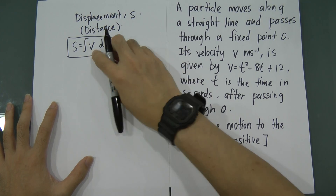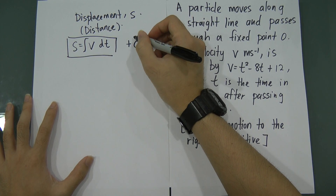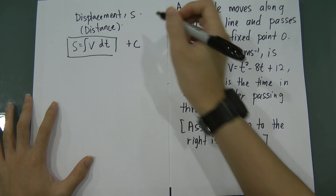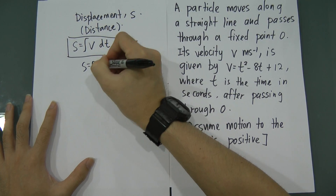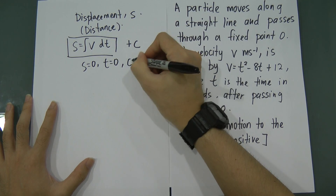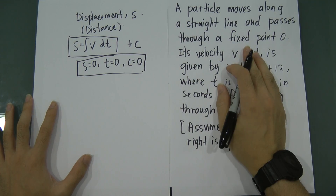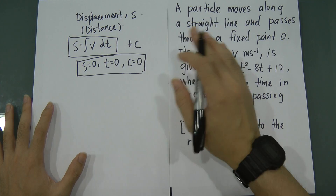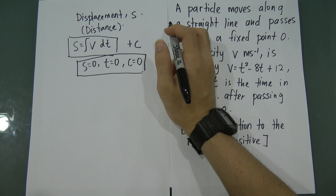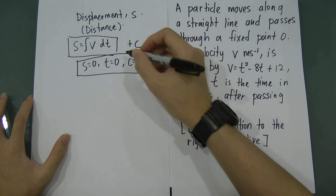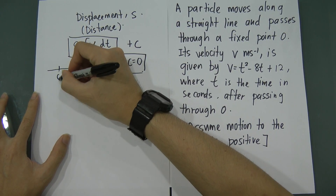One issue you will face when you integrate velocity is that you get a constant c, and most students feel very confused about how to find the value of c. I can teach you one method: in almost all SPM cases, when s equals zero, t will equal zero, and c will equal zero.